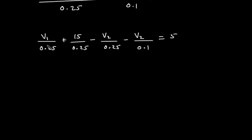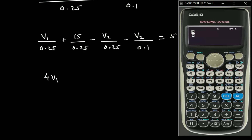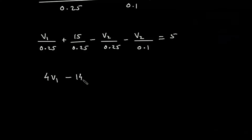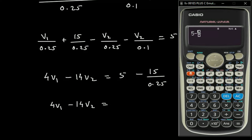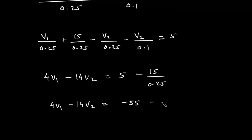Simplifying: 1 by 0.25 gives 4V1. Then minus 1 by 0.25 minus 1 by 0.1 gives minus 14V2. The right side is 5 minus 15 by 0.25, which equals minus 55. So Equation 2 is: 4V1 minus 14V2 equals minus 55.